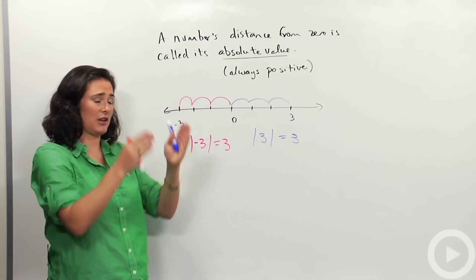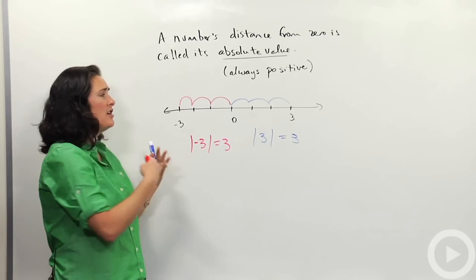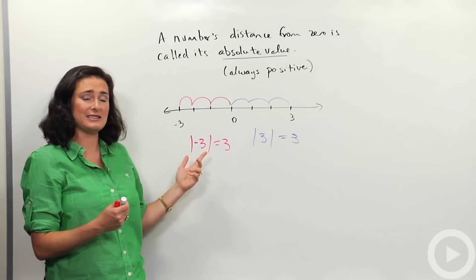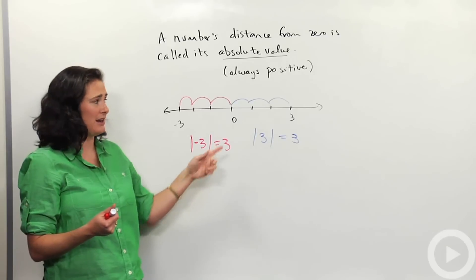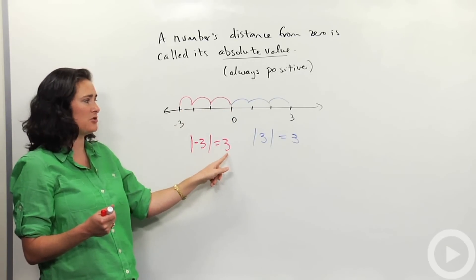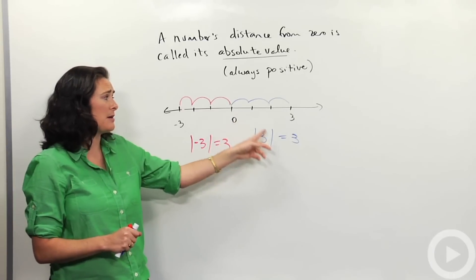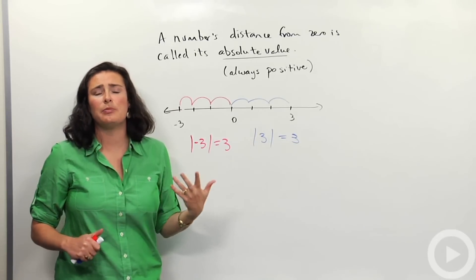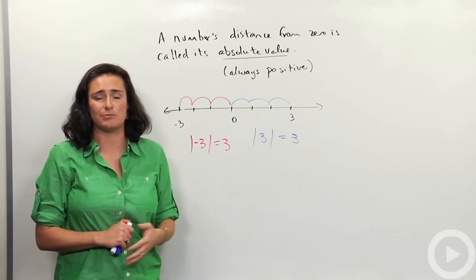And the way we notate absolute value is these two vertical lines. So the key idea is when you're working with absolute value is that because it's a distance, your answer should always be positive. Even if I'm moving from negative three to zero, that's a positive distance that I'm traveling. So that's a three. Same thing. Positive three distance away from zero, still positive three. And we're going to practice using that idea with some different problem types as well.